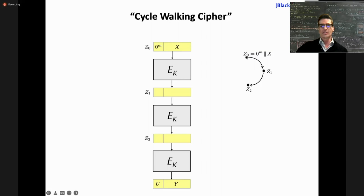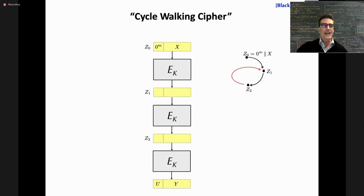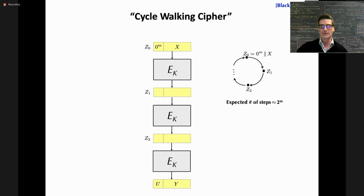Every permutation decomposes into disjoint cycles. What we're doing is cycle walking — starting at point z0, applying the cipher to reach z1, then z2, walking around the cycle. We can't have a non-cycle shape because that would violate the permutation property. So the process always terminates: at some point you hit a string whose upper m bits are all zero.